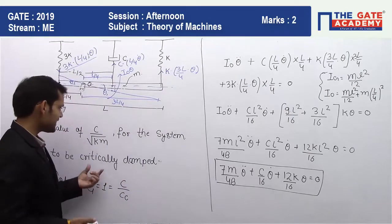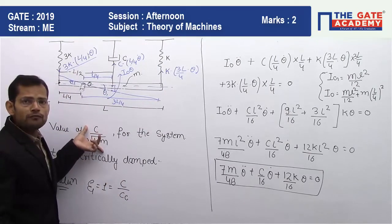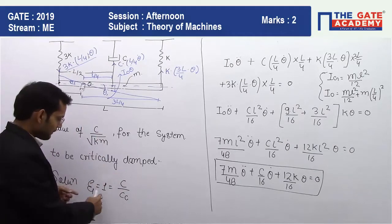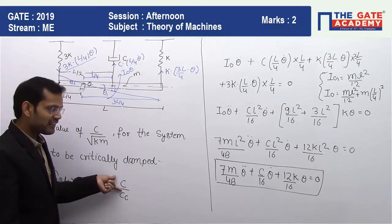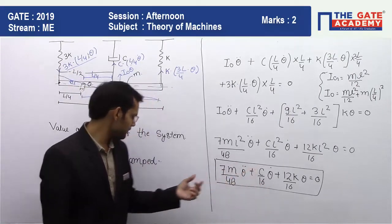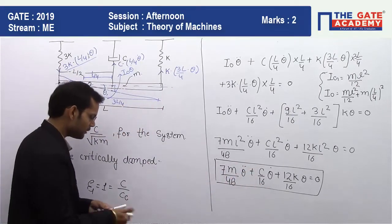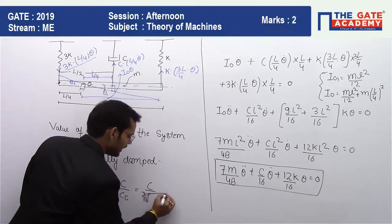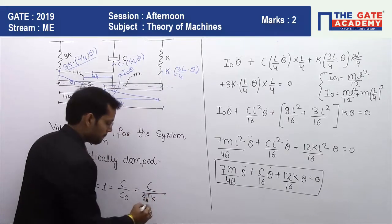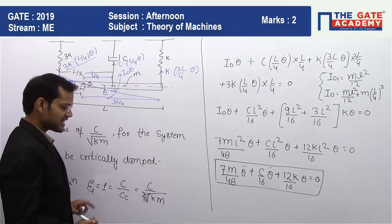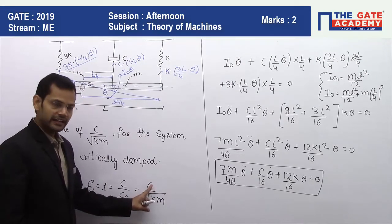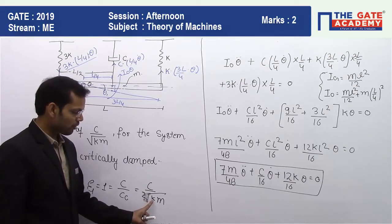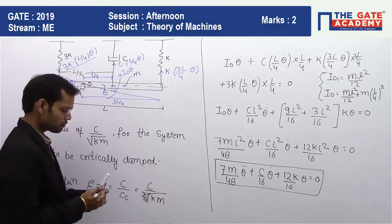For critical damping, the damping ratio zeta equals 1, which means the actual damping coefficient equals the critical damping coefficient cc. The critical damping coefficient is cc = 2√(k_eff × m_eff). Setting the effective damping C/16 equal to cc = 2√(k_eff × m_eff) gives us the condition for critical damping. The effective stiffness k_eff is 12k/16 and the effective mass m_eff is 7m/48.